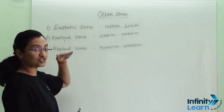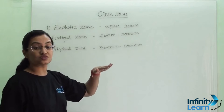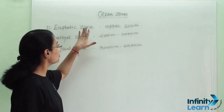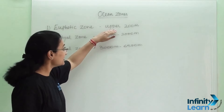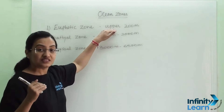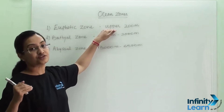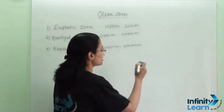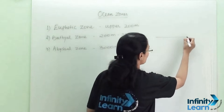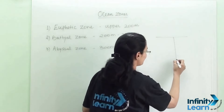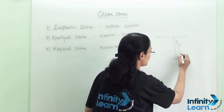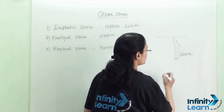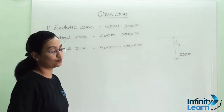The first one, which is the uppermost zone of the ocean, is the euphotic zone, and it goes up till 200 meters of depth. So if this is the surface of the ocean, then taking 200 meters of depth, this zone is known as the euphotic zone.